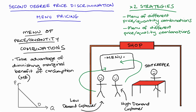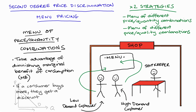Just to review, this is why we have a downward sloping demand curve. As we consume more, our willingness to pay for each marginal unit gets lower and lower because our marginal benefit of consumption diminishes. This basically means that in order to incentivize the consumer to buy more, the firm will have to lower their price. So we offer different options where if the customer buys more, they get a per-unit discount.